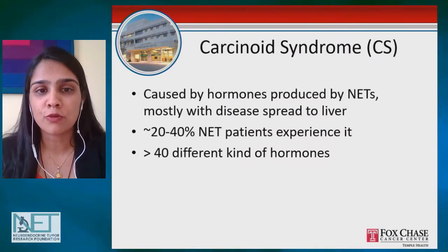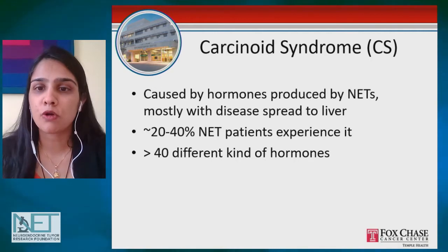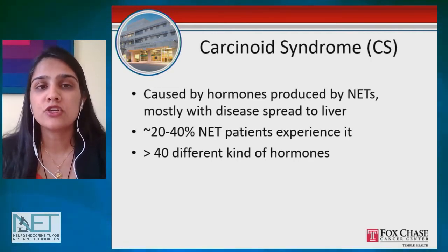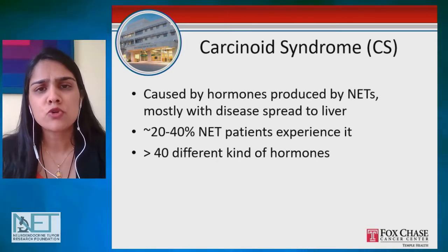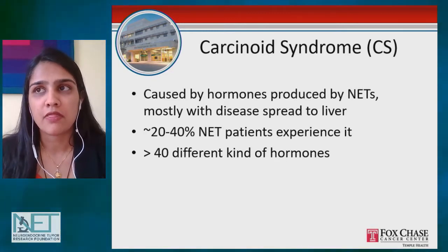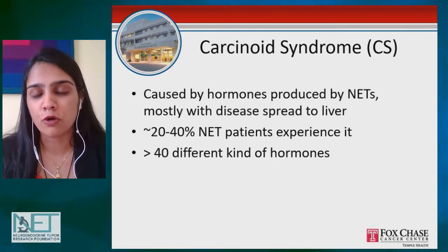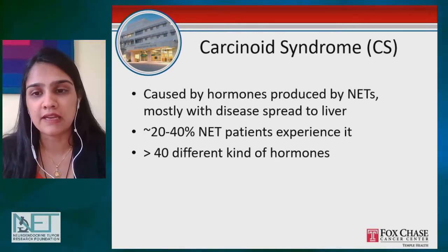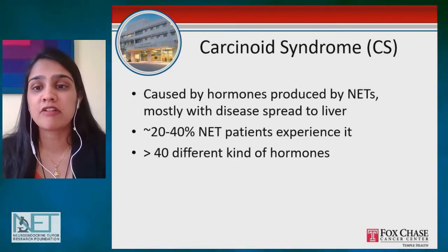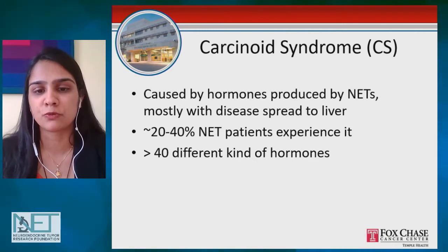Carcinoid syndrome is caused by hormones produced by neuroendocrine tumors. It is mostly due to tumors in the liver, and about 20 to 40% of neuroendocrine tumor patients experience this syndrome. There are about 40 different kinds of hormones implicated in this, and it is associated with a very specific but very diverse set of symptoms.